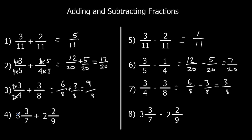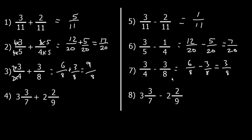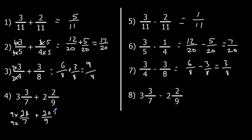Okay, so here I've got 3 and 3 sevenths. I've got 3 whole ones and they're in sevenths. So 3 times 7 is 21 — I've got 21 sevenths — and a further 3, so I've got 24 sevenths. I've got 2 whole ones and they're in ninths. So 2 nines are 18, plus another 2, that's 20 ninths. And now I need to make the bottom numbers the same, so I'm going to times this one by 9 and times this one by 7.